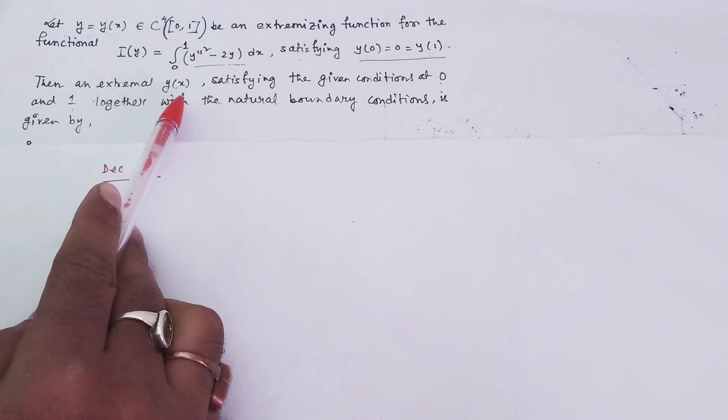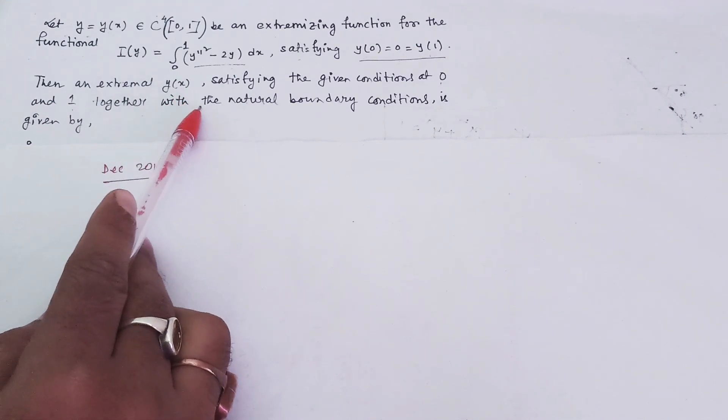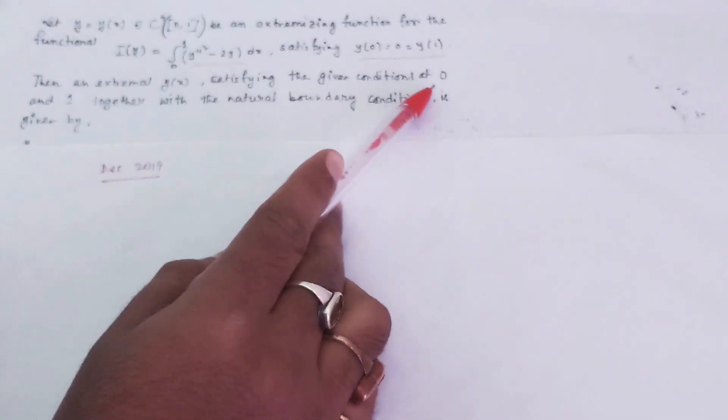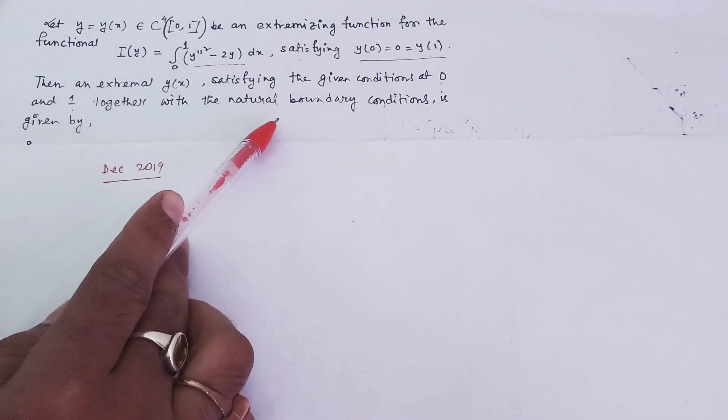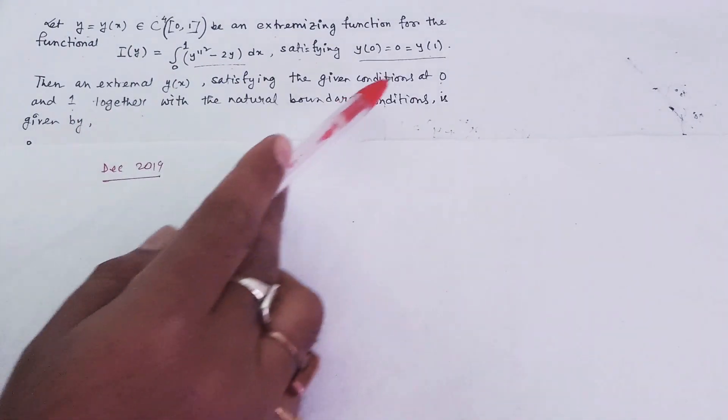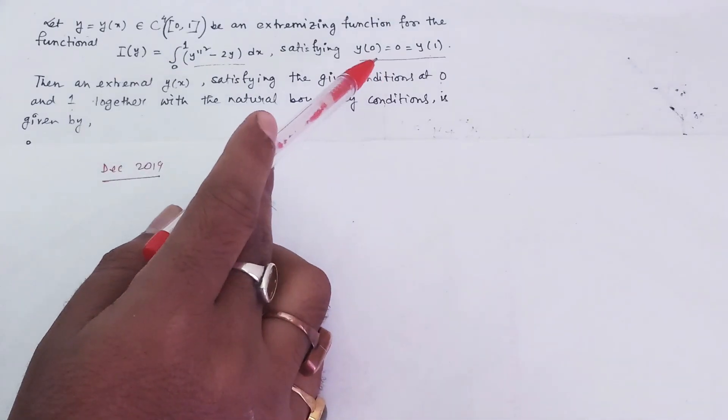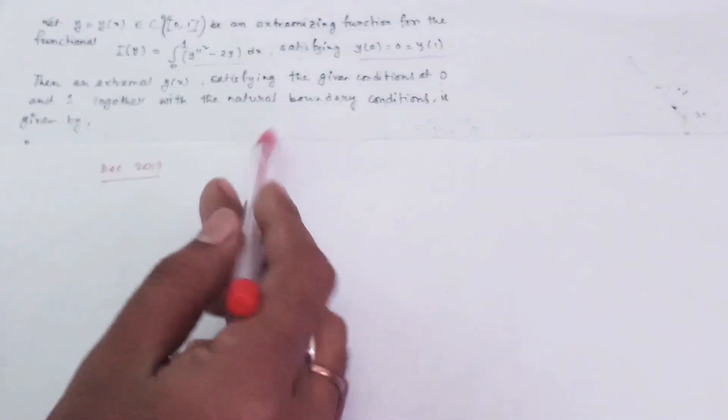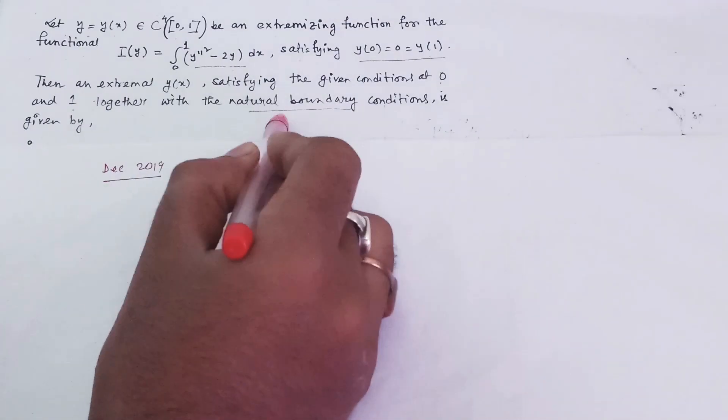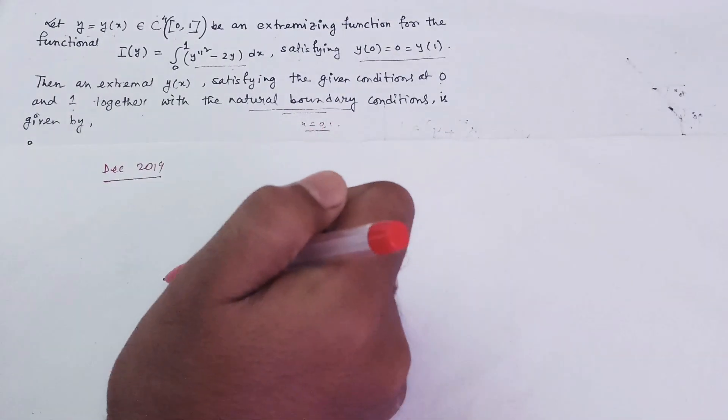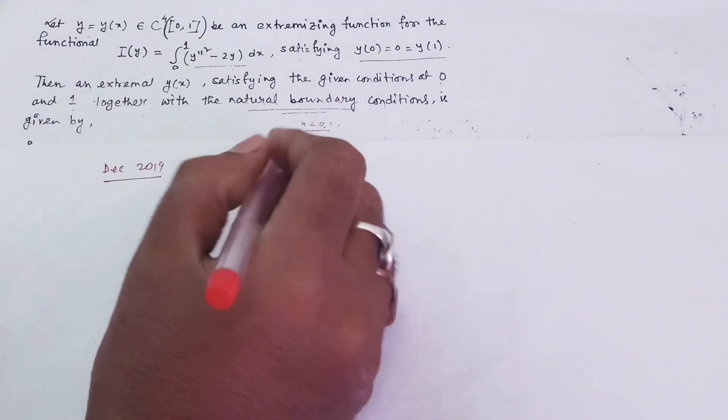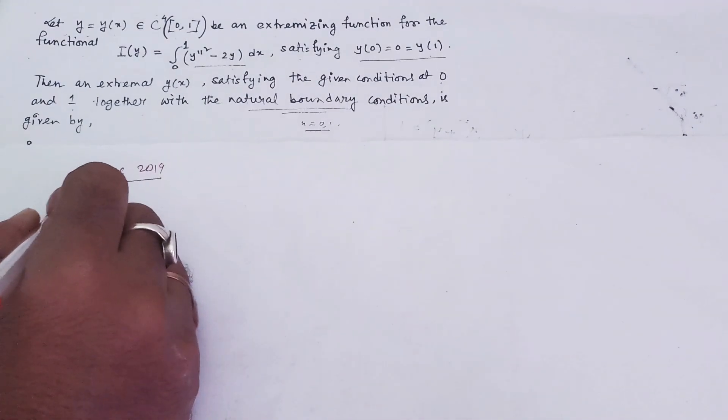To find the extremal y(x) satisfying the given conditions at x = 0 and x = 1, you need to use these two conditions together with the natural boundary conditions at x = 0 and x = 1.